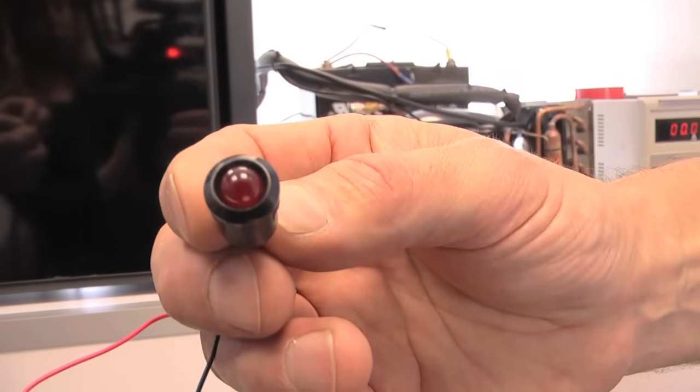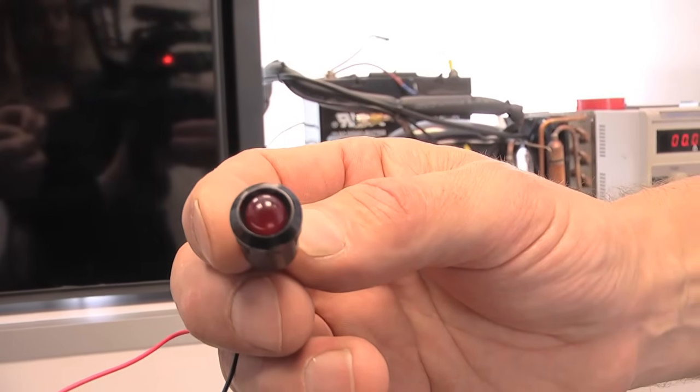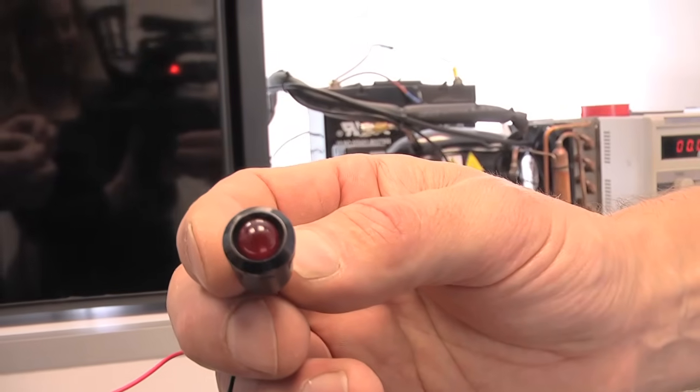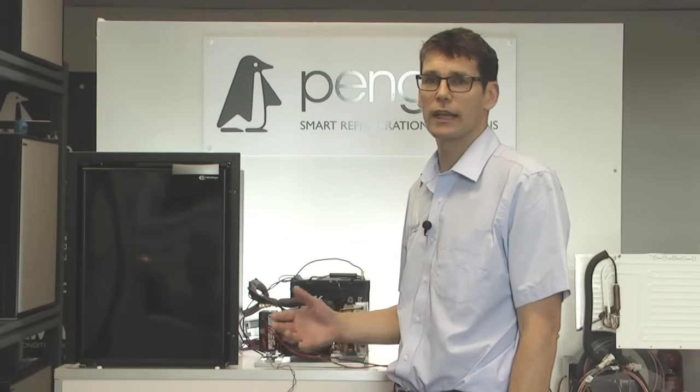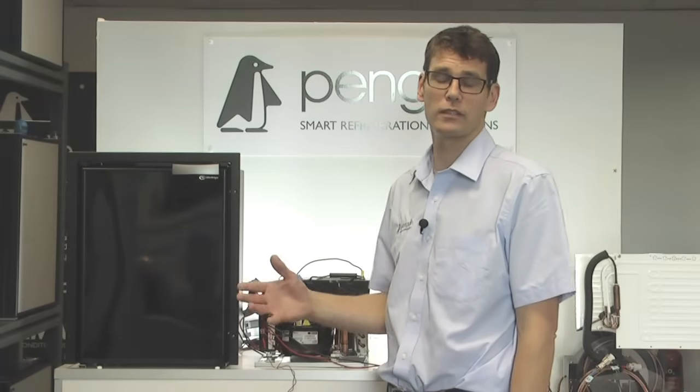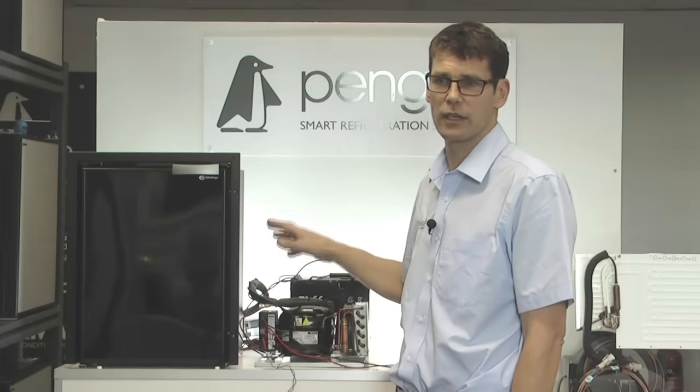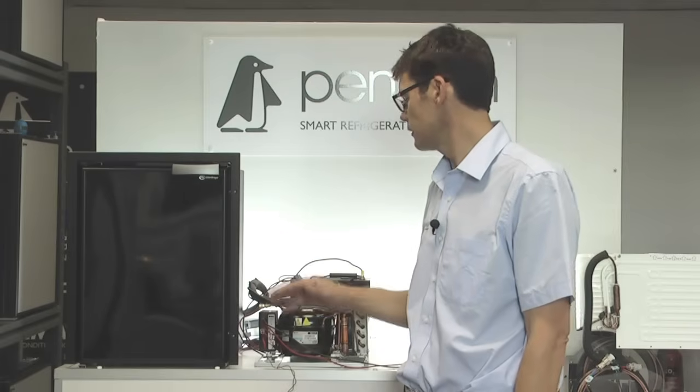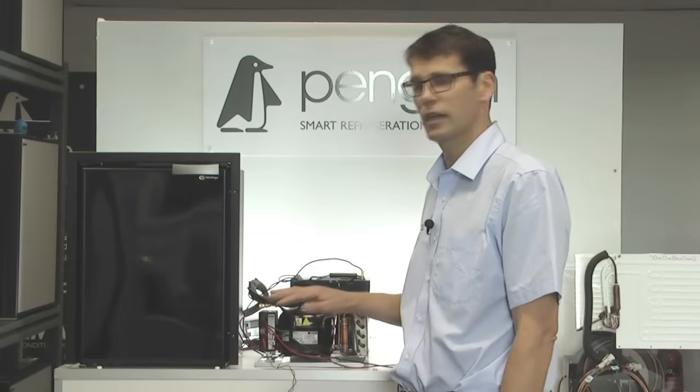So the next fault code we're going to look at is fault code 3. This is 3 flashes every 4 seconds. This is generally caused by interference to the voltage, so the voltage is going up and down. It can be caused by inverters going on or off, or sometimes winches on boats. It could also be caused by the pressure in the system. So the very first thing we would suggest you do, if you do get a 3 flash code, is to turn the fridge off and leave it for 20 minutes.